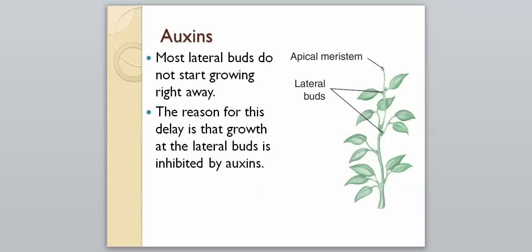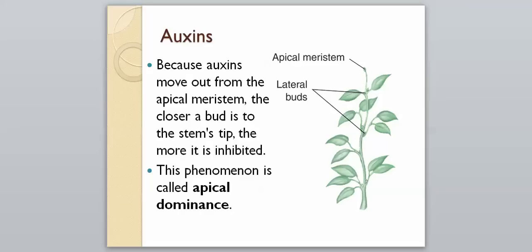Most lateral buds do not start growing right away. The reason for this delay is that growth by the lateral buds is inhibited by auxins — auxins present in that area are signaling that it's not yet time to start growing. All the auxins are coming from the apical meristem at the top. Because auxins move out from the apical meristem, the closer a bud is to the stem's tip, the more it is inhibited. This phenomenon is called apical dominance.